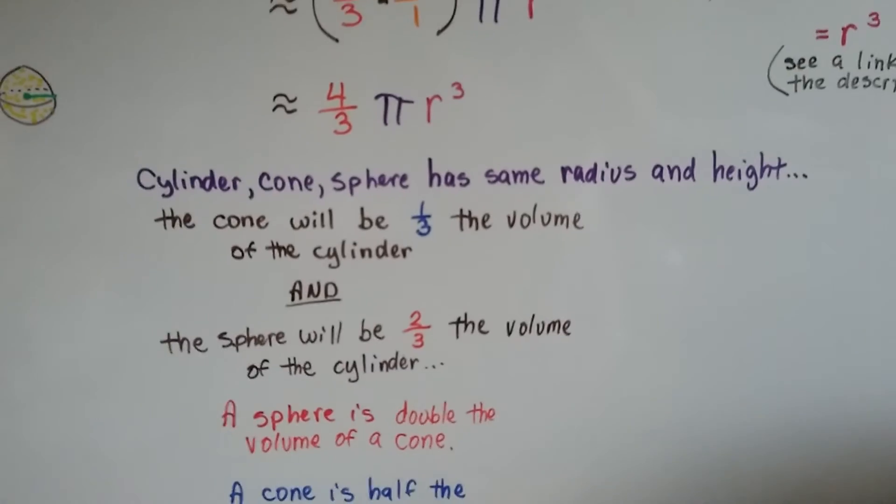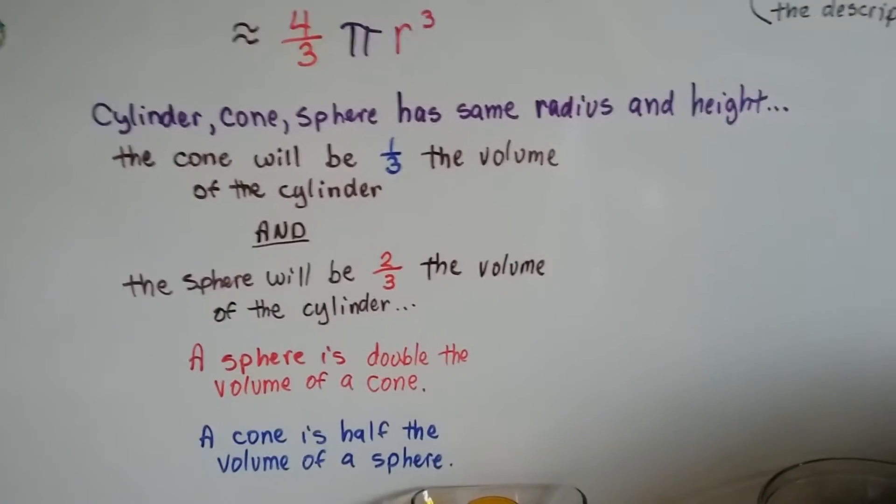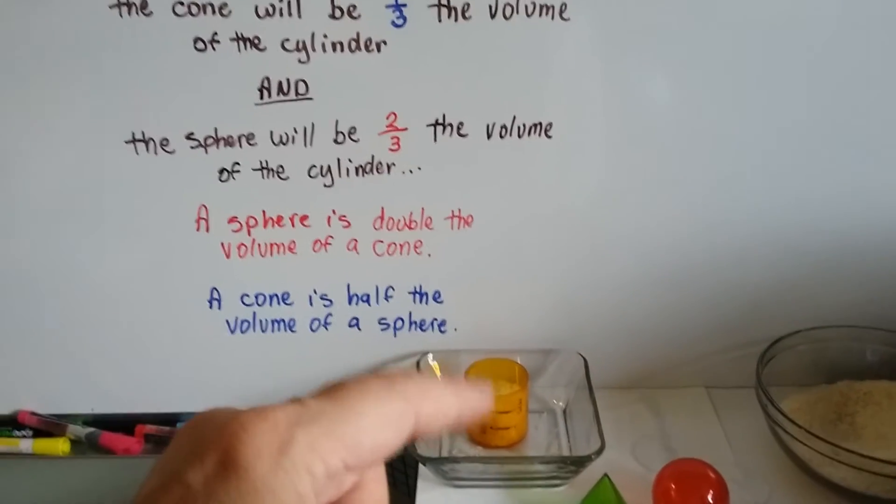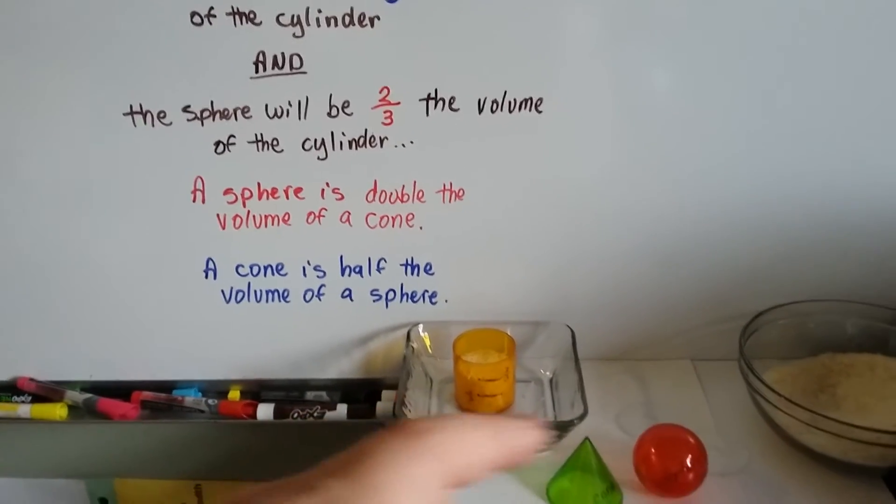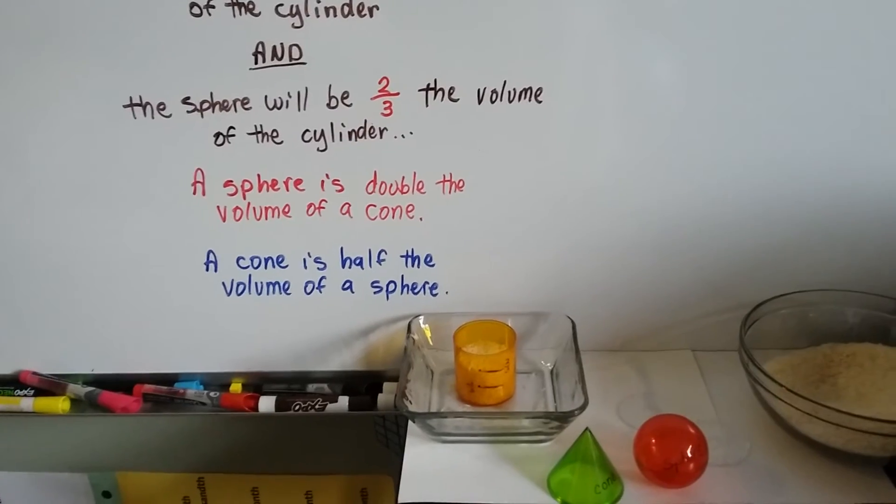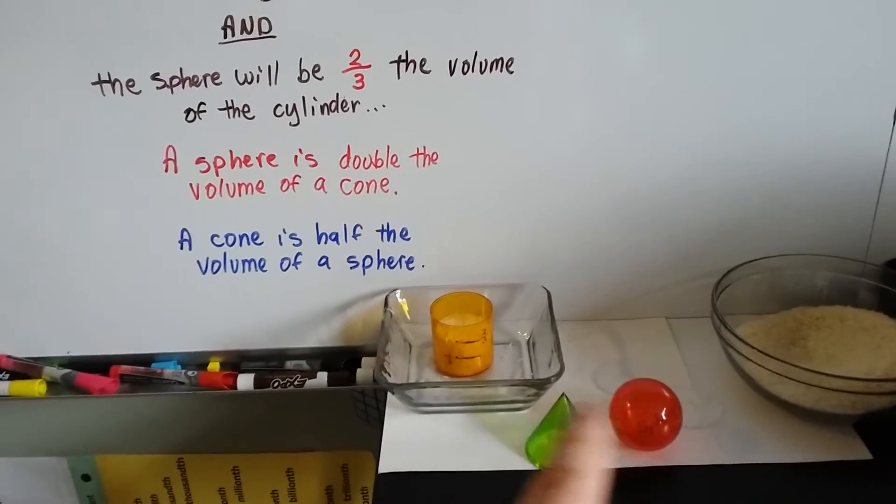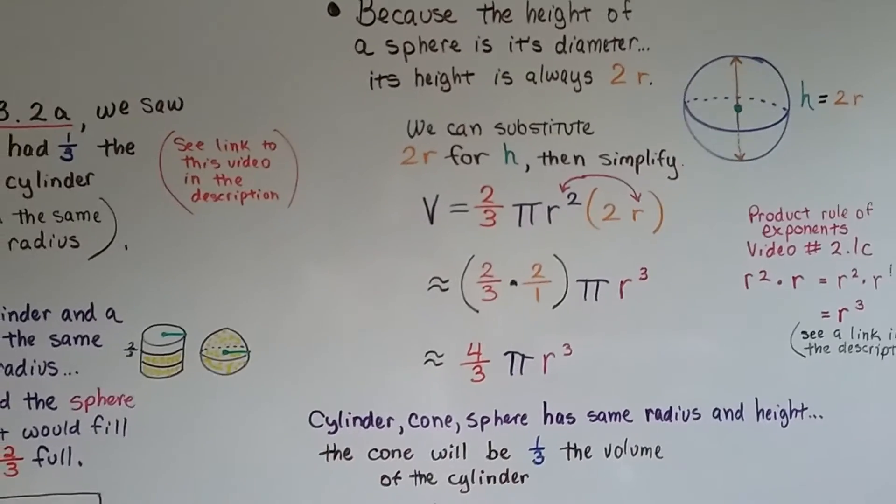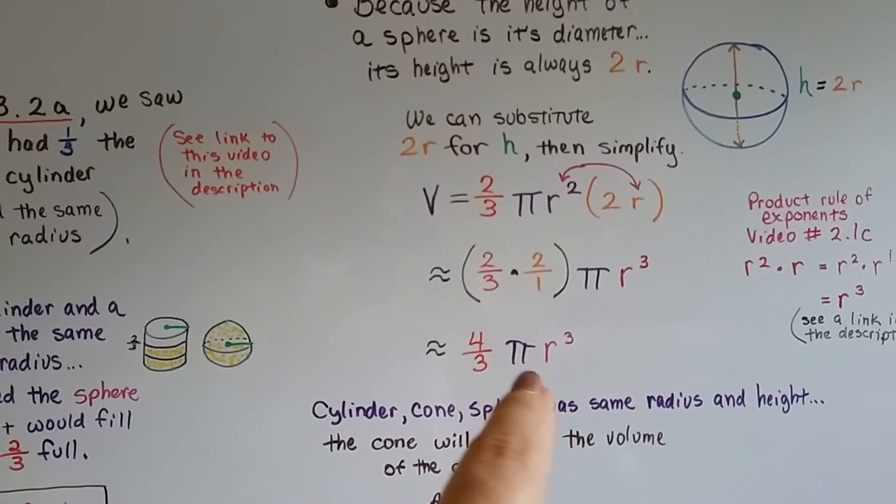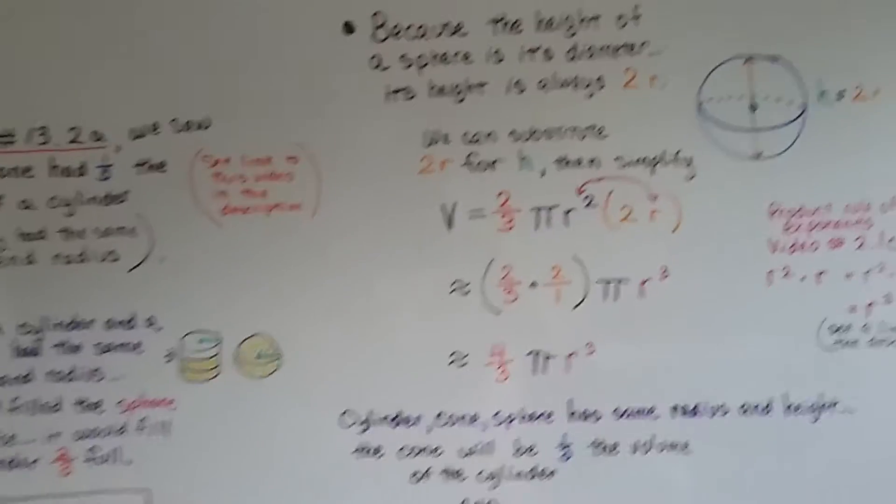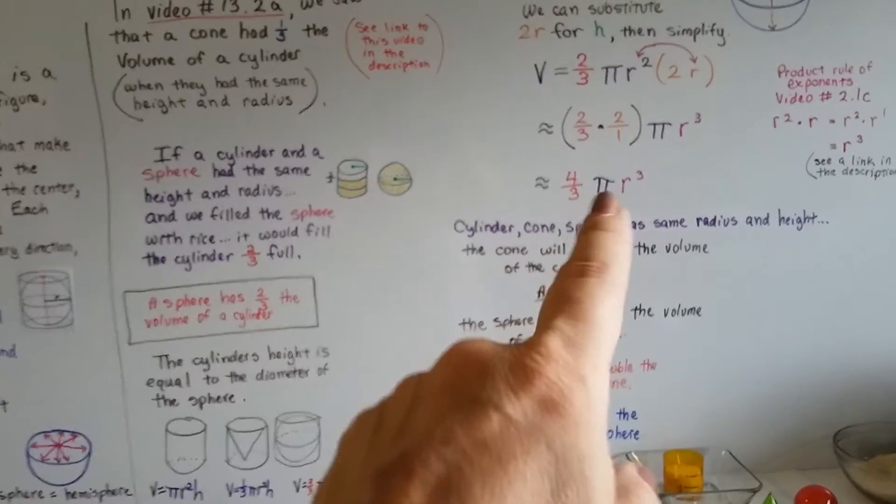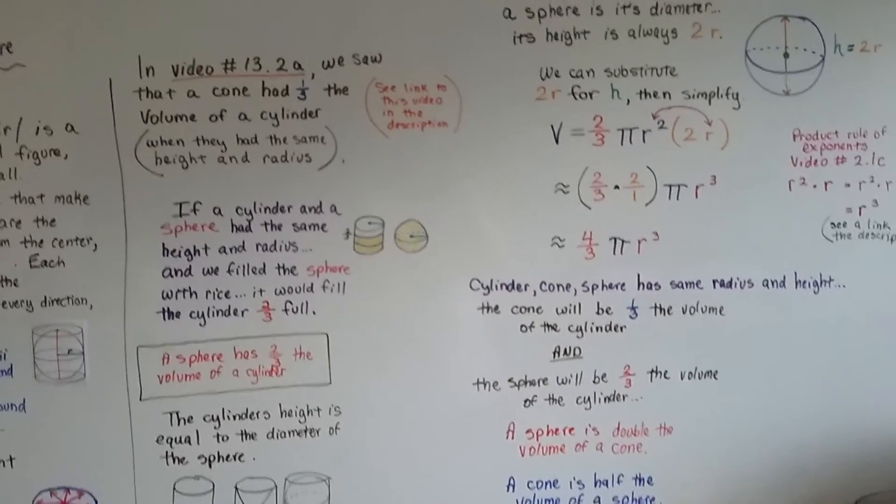Now, the cylinder, cone, and sphere that has the same radius and height, the cone will be one-third the volume of the cylinder, and the sphere is going to be double the volume of the cone, and the cone is going to be half the volume of the sphere. And that's why we had the one-third and two-thirds there. But now you know, for the volume of a sphere, we can do four-thirds pi r cubed. Either way, you could do it this way, or you could do it this way. But this is the most used.